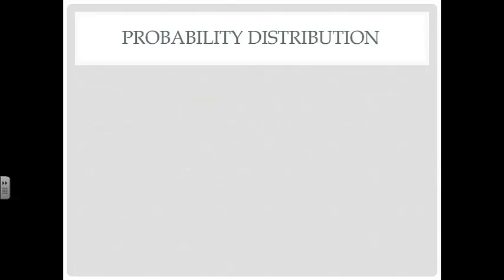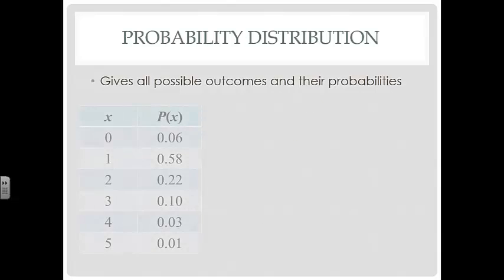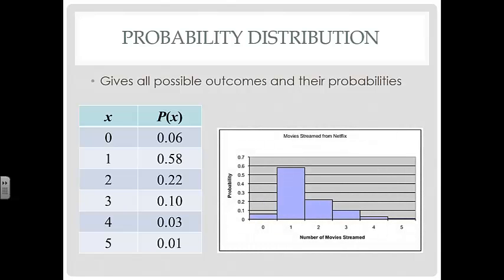So what is a probability distribution? It gives all possible outcomes and their probabilities. Here's an example of a probability distribution. You have all the values for X, and then all the probabilities of the occurrence of X. We could look at this in a histogram, or we could look at it as the table that we just looked at. Here's a histogram that basically shows the same information, it's just displayed differently. Your X values are along the X axis, and your probabilities are along the Y axis.